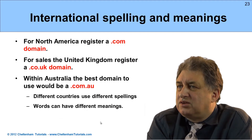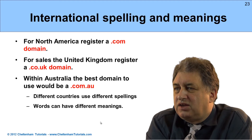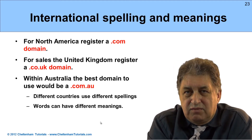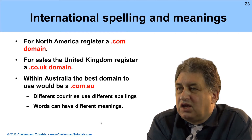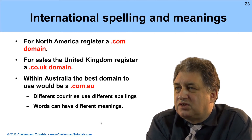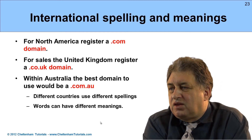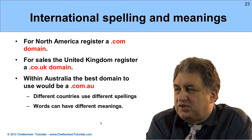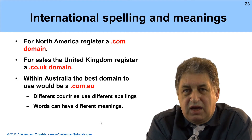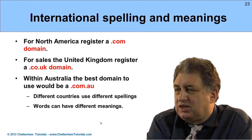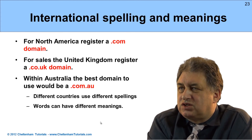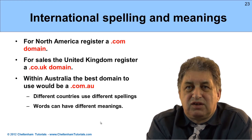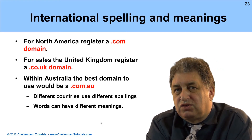International spellings and meanings are important when thinking about keywords - different countries have different spellings and words can have different meanings. For instance, in the United States the word 'organize' is spelled with a Z, whereas in the UK and Australia it's spelled with an S. These are the sorts of things you should take account of when researching your keywords, and consider whether you need different keywords set up for different international target audiences.